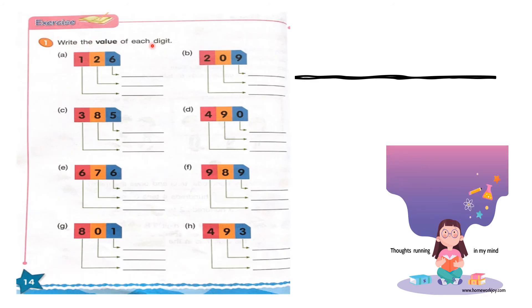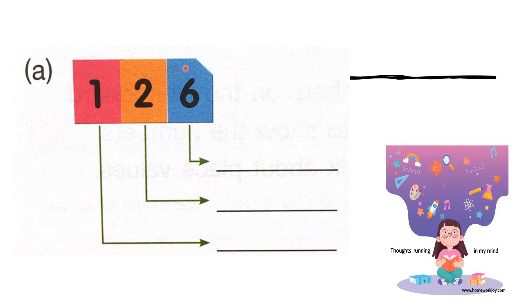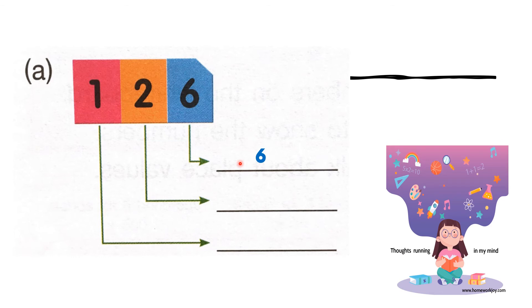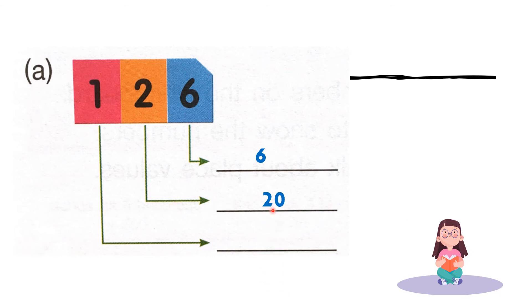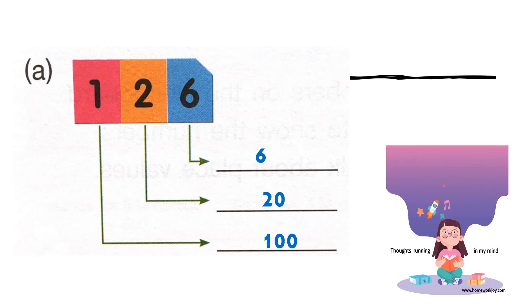Exercise: write the value of each digit. Open your book, page number 14. Letter A: what is the value of 6 in the 1s place? 1s, tens, hundreds. The value of 6 is the same — 6. Next, the value of 2 in the 10s place — your answer is 20, you add a zero. How about in the hundreds place? The hundreds value is 100, you add two zeros.